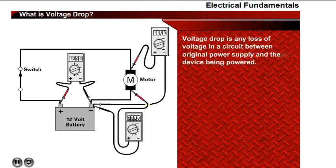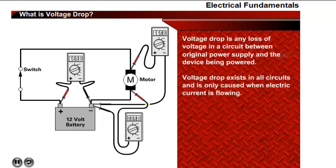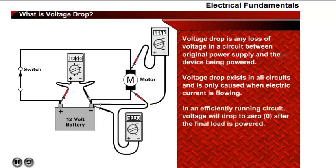Voltage drop is the amount of voltage in a circuit that's lost between the originating power supply and the device being powered. Voltage drop is normal in all electrical circuits and only occurs when electric current is flowing. For a circuit to operate efficiently, it's important to keep voltage drop to a minimum. In an efficiently operating electrical circuit, the voltage will drop to zero directly after the last load device being powered.